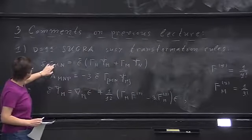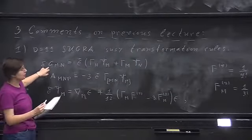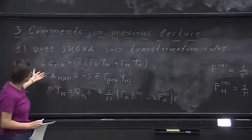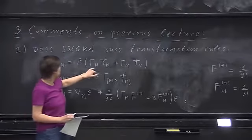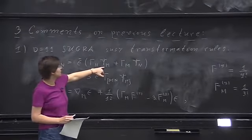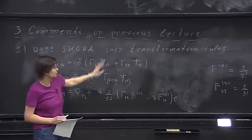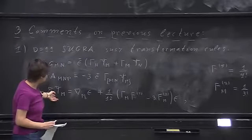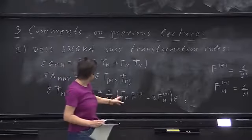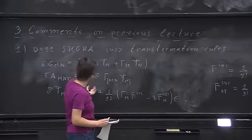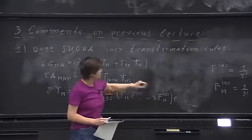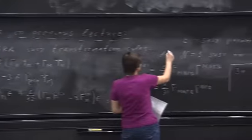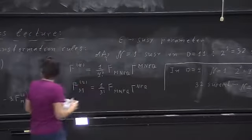In this lecture, the metric I'll denote with capital G, because soon I'll introduce a small g that will be a metric in 10 dimensions. So the 11-dimensional metric is capital G. These are the supersymmetry transformation rules of 11-dimensional supergravity. Gamma are just the gamma matrices; psi is the vector spinor, and the spinor index is suppressed. The three-form transforms into the gravitino, and the gravitino transforms into a combination.